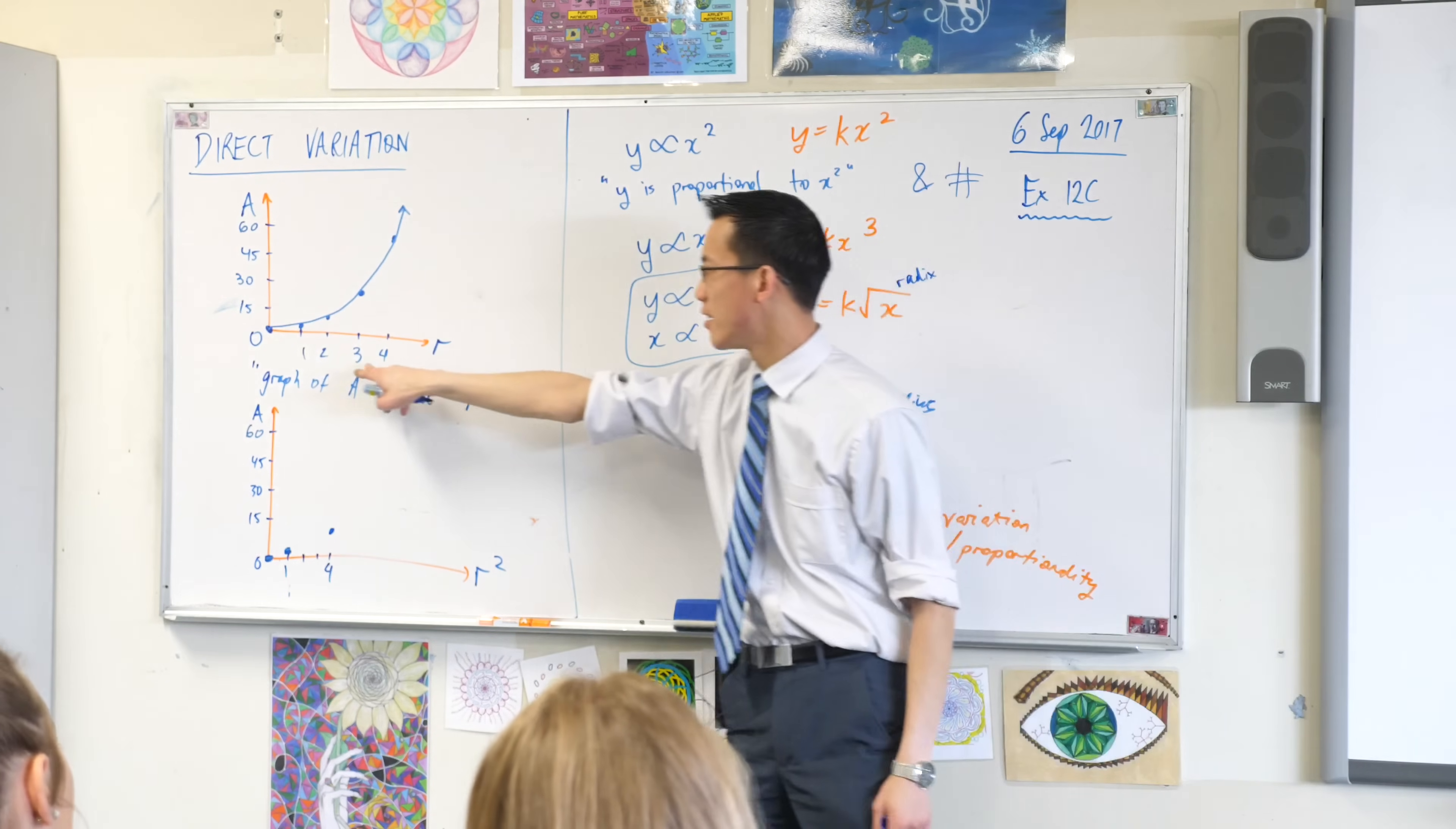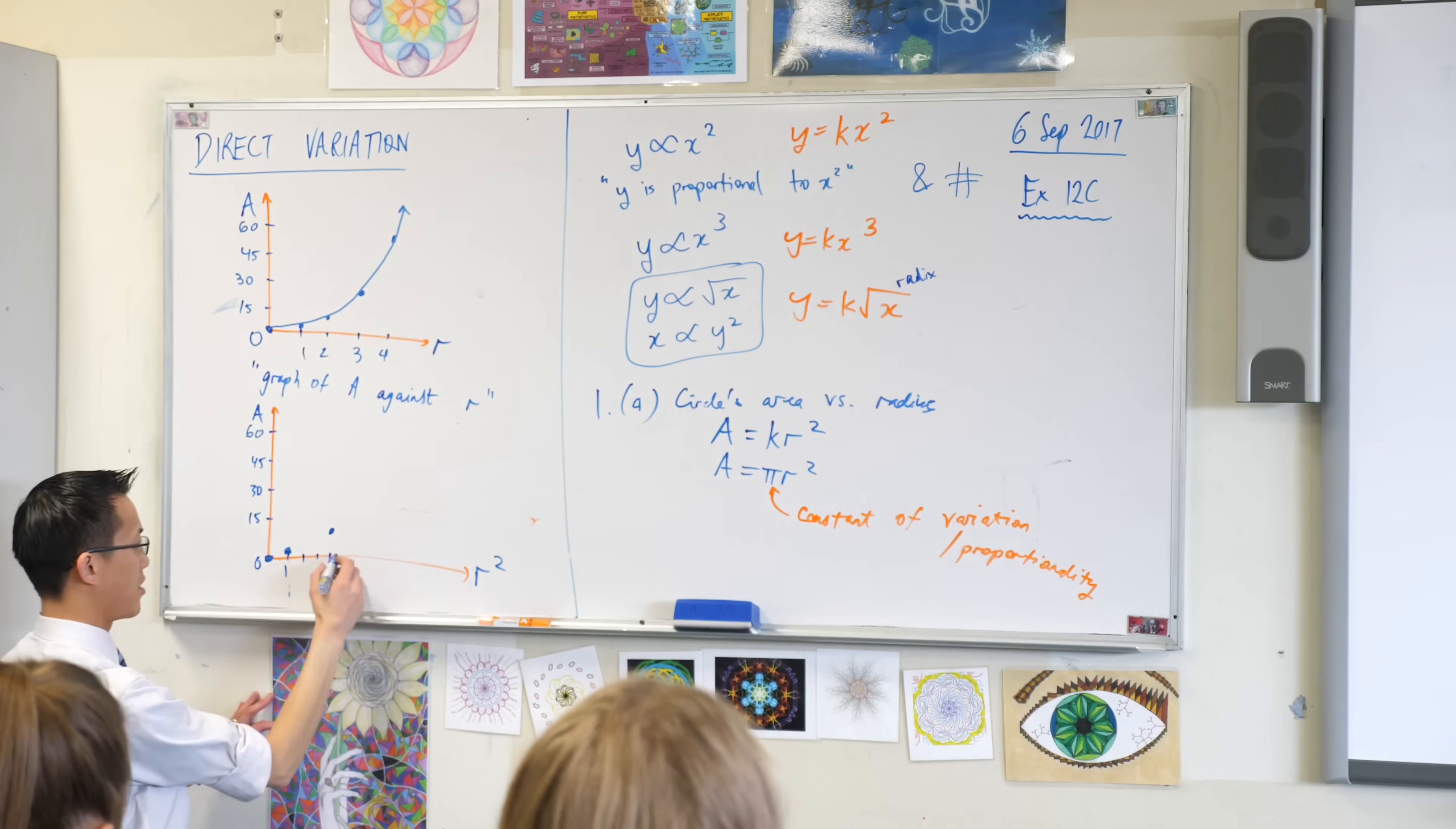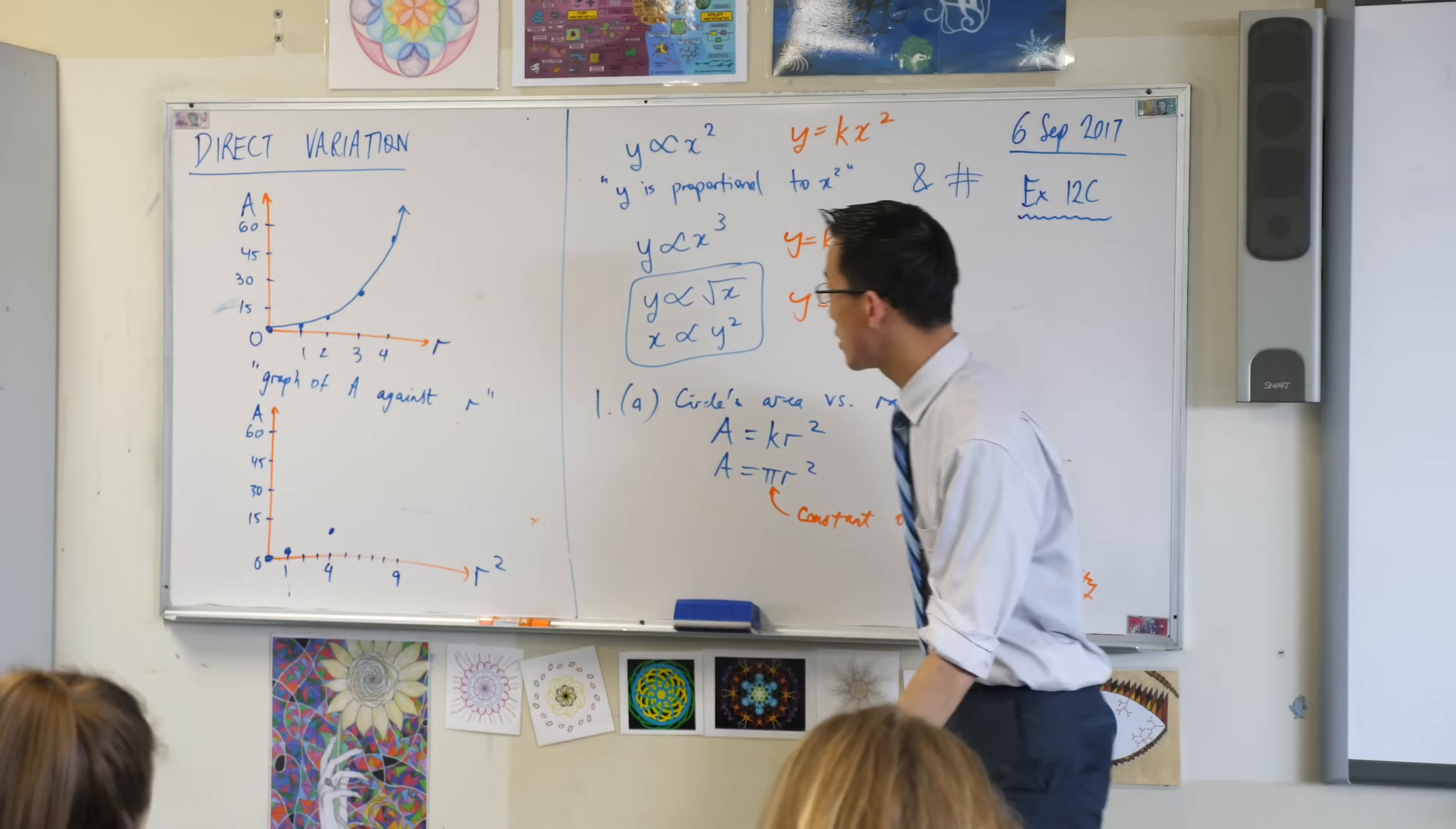All right, how about this one here? When r equals 3, what's r squared? It's 9, so on my horizontal axis I'm going to go all the way to 9. So I'm at 4 at the moment: 5, 6, 7, 8, 9. What was the area this time?